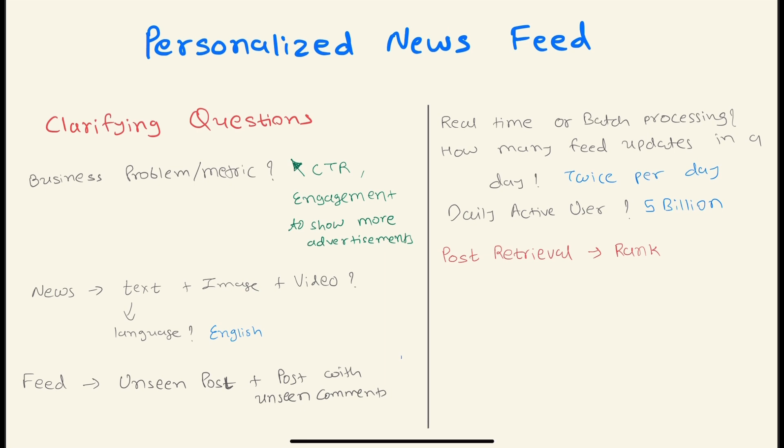Second, what kind of data or feed do we have? It can be a combination of text, image, and video. What's the language of the text? It can be anything, but for this problem we'll consider English. What should we show in the feed? Unseen posts plus posts with unseen comments - that would be helpful to increase engagement.